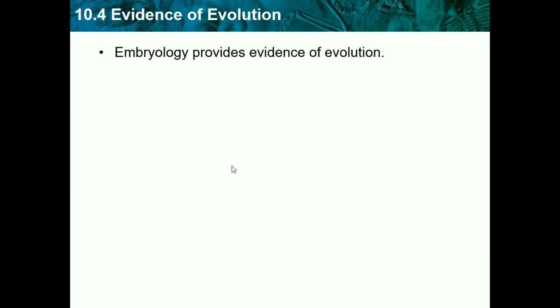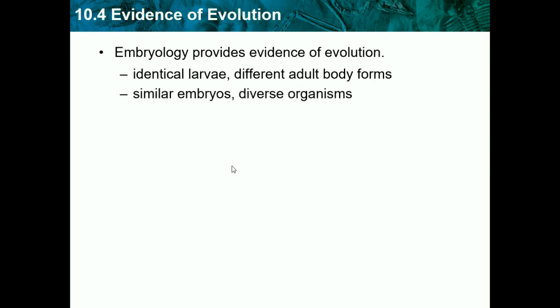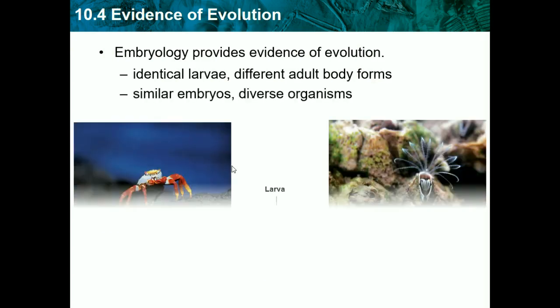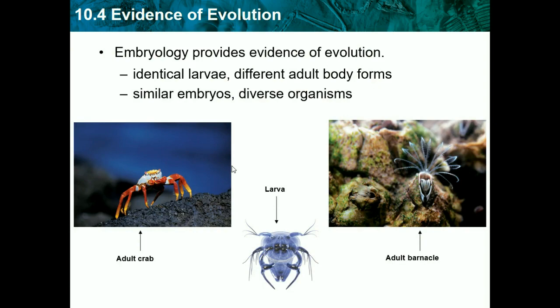Embryology provides evidence of evolution as well. Identical larvae but different adult body forms show evolution. Similar embryos are found across diverse organisms. Most larvae look the same, but eventually they grow into different adults.